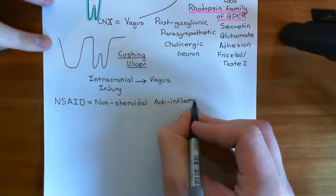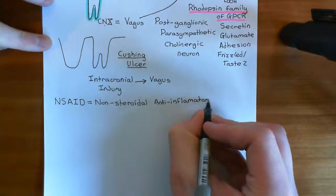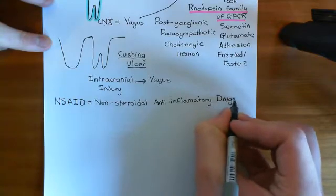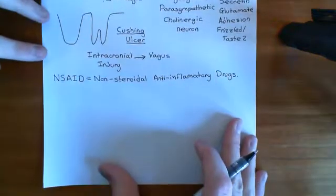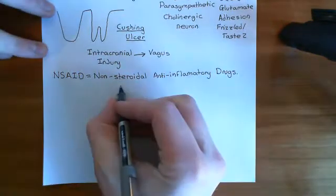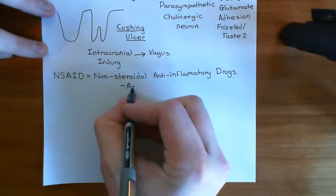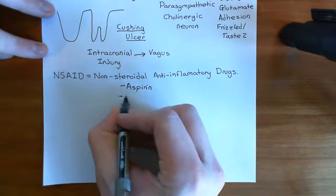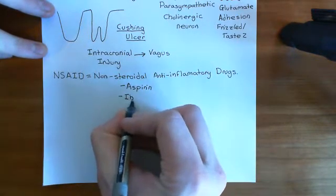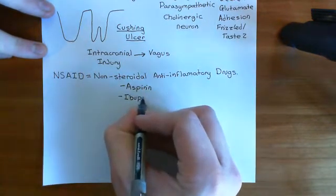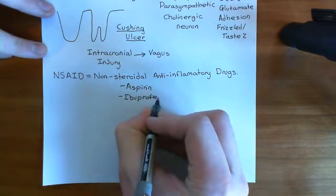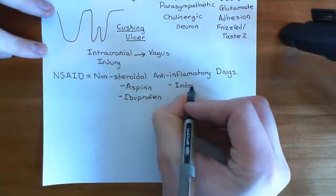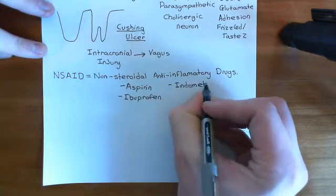The NSAIDs are very famous drugs — many of the drugs you will have taken before in your life will be NSAIDs. Examples include aspirin, ibuprofen, and slightly less well-known examples but still very famous drugs: indomethacin and diclofenac.